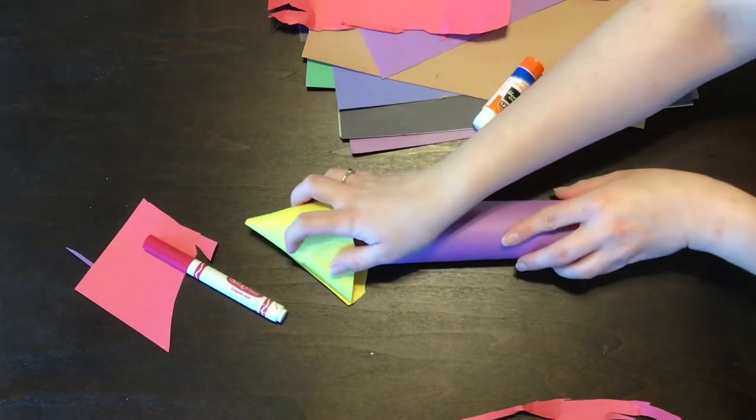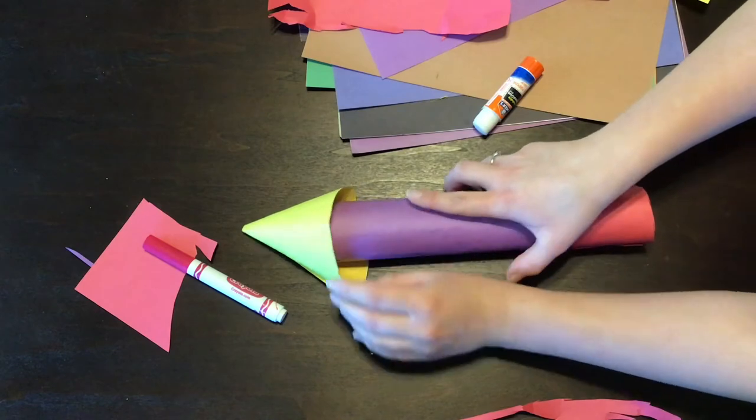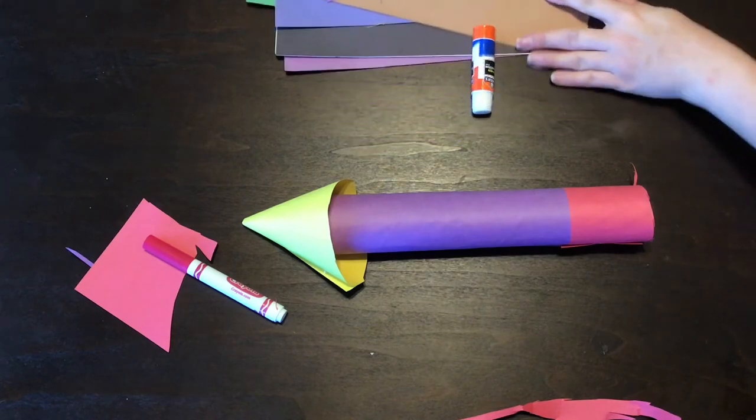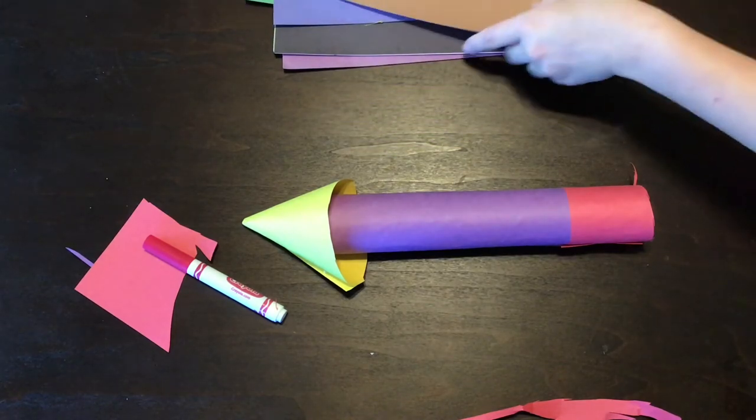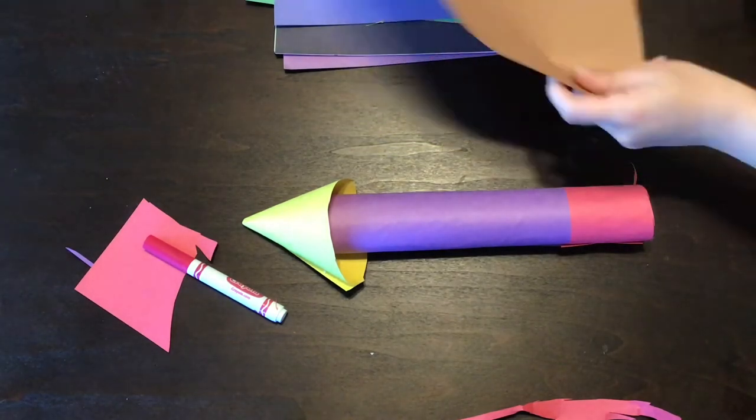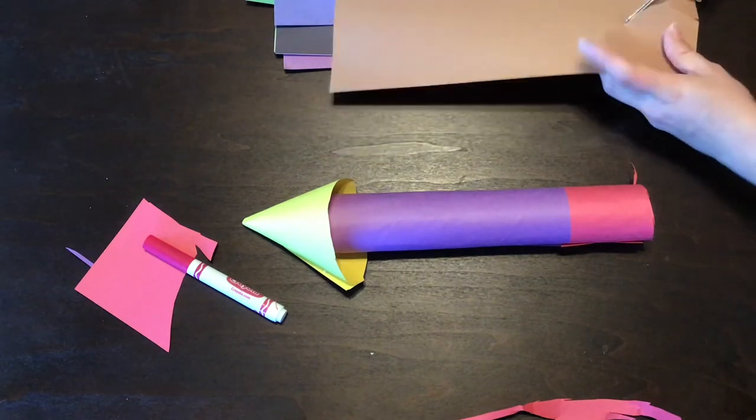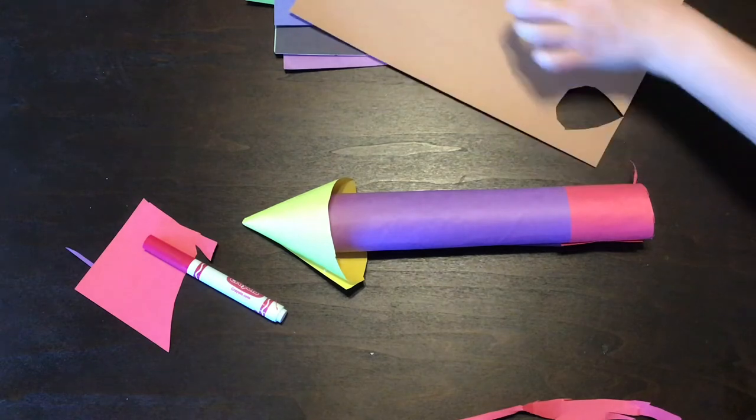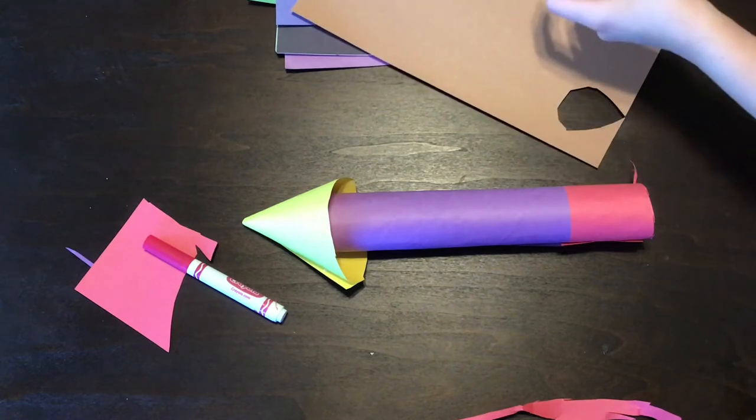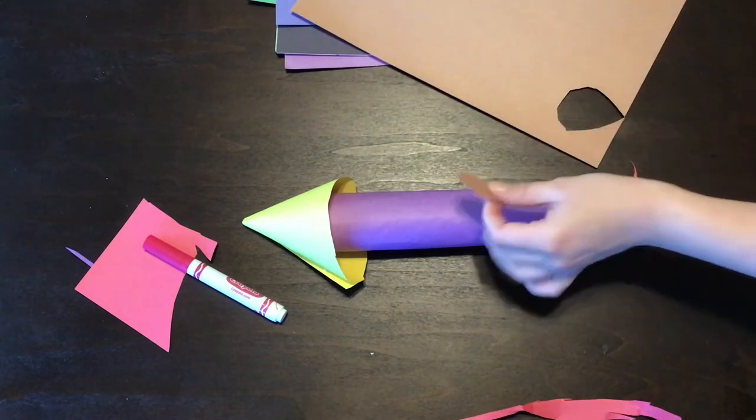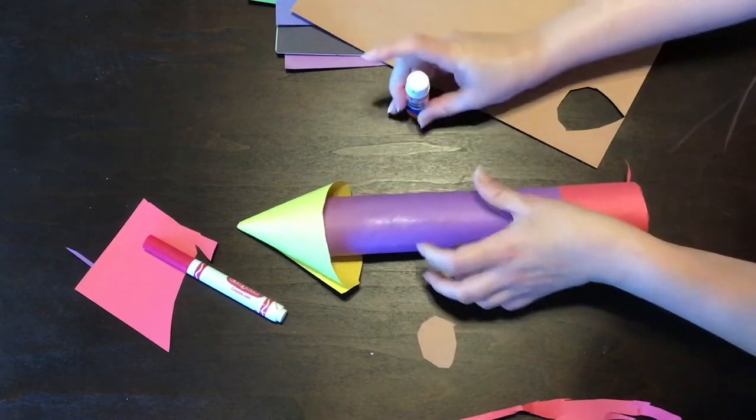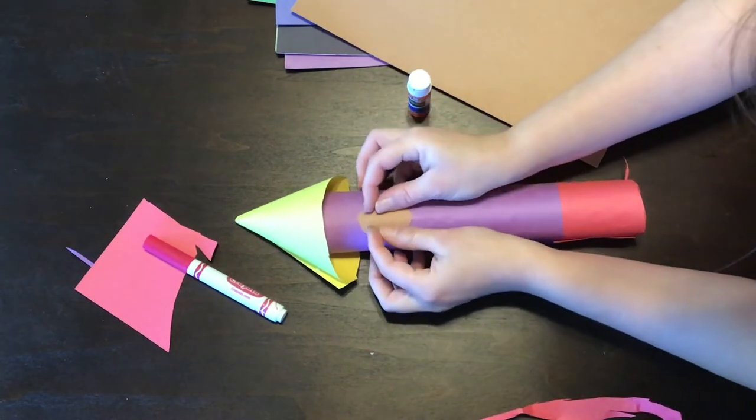Well, now what I need to do is decorate my rocket ship. There's no windows. There's no doors. There's no logos on my rocket ship. I have things to make. So go ahead and grab some colors, cut out some different shapes. You can write on your rocket ship and add cool symbols. Here's my window. I'm gonna put a window right at the top so we can see everything that's happening.